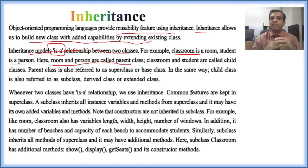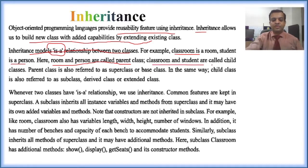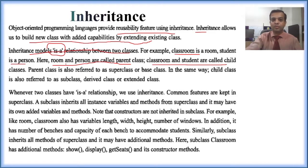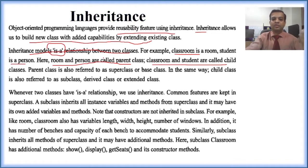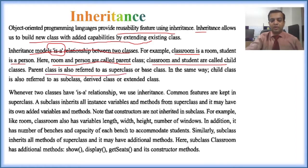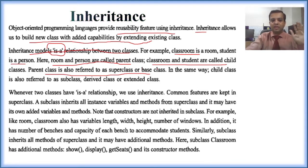The main class is called parent class, or super class, or base class. Classroom and students are called child class — room is called parent and student is called child. Parent class is also referred to as super class or base class. Parent class, super class, and base class are all three equal.